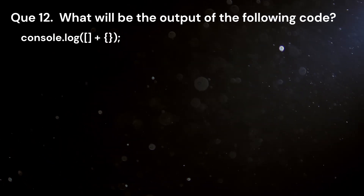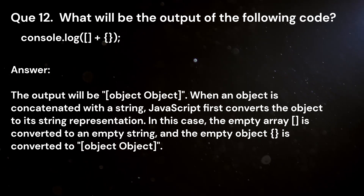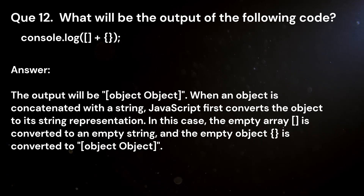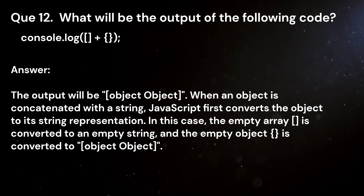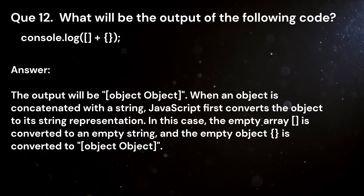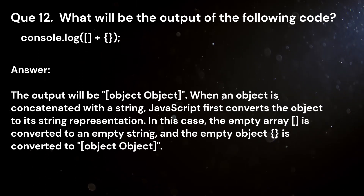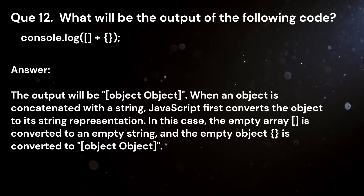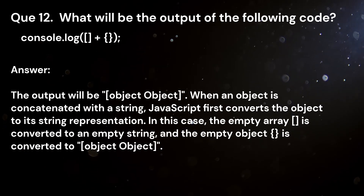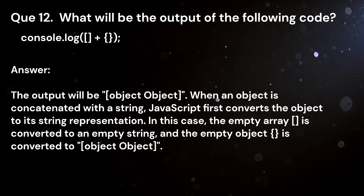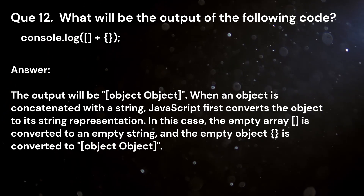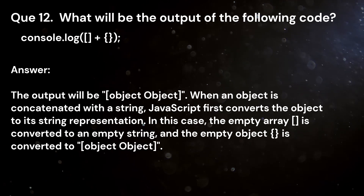Question 12. What will be the output of the following code? console.log([] + {}). Answer. The output will be [object Object]. When an object is concatenated with a string, JavaScript first converts the object to its string representation. The empty array is converted to an empty string and the empty object is converted to [object Object]. Concatenating the two strings results in [object Object].